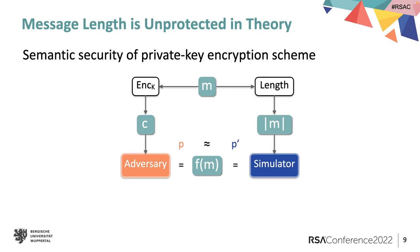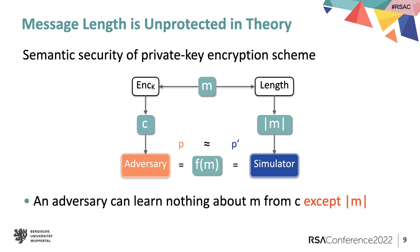The semantic security for private key encryption scheme is an example. In this setting, an adversary learns a ciphertext of some message M and would be able to correctly predict the information F of M with probability p. Semantic security guarantees that there is a simulator which can output F of M with approximately the same probability p', and the simulator does not see any ciphertext, but instead sees the message length. In other words, semantic security guarantees that an adversary can learn nothing about the message from the ciphertext except for the message length.